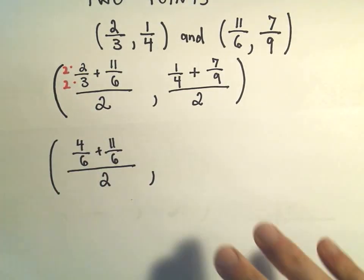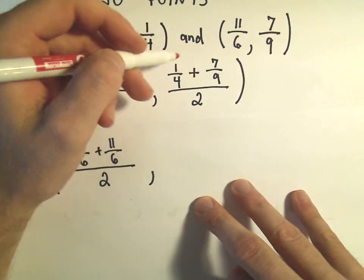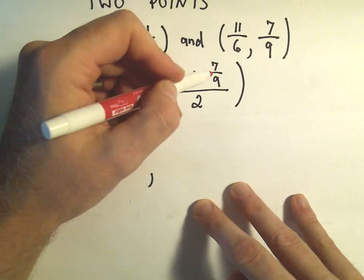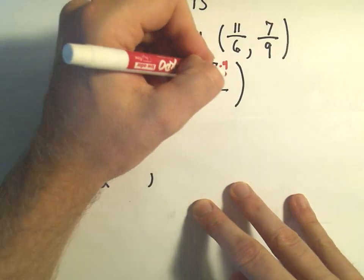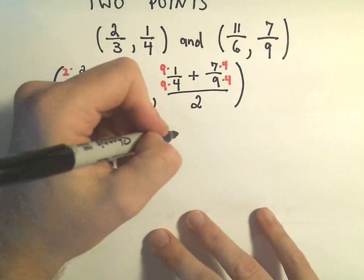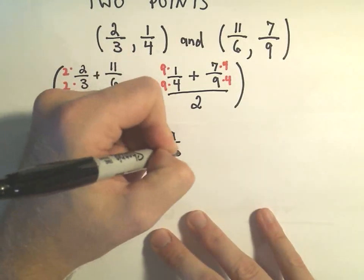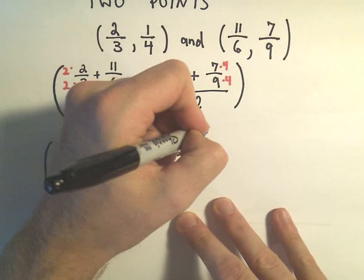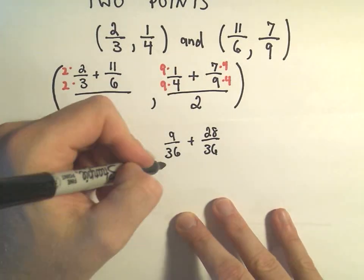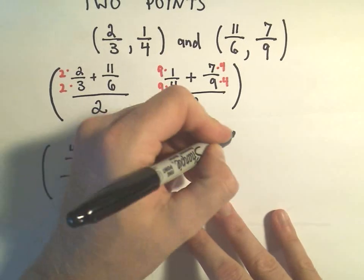So for our other fraction to get common denominators, I think for the first fraction we're just going to have to multiply the top and bottom by 9. For the other fraction we'll just have to multiply the top and bottom by 4. So it looks like we would get 9 over 36 plus 28 over 36 when we multiply, again all that divided by 2.